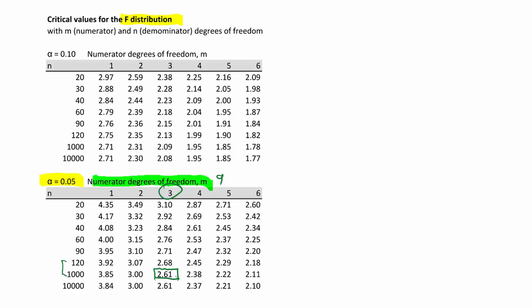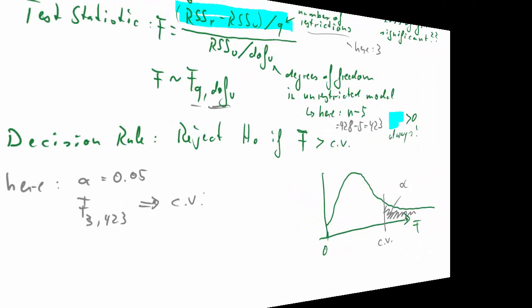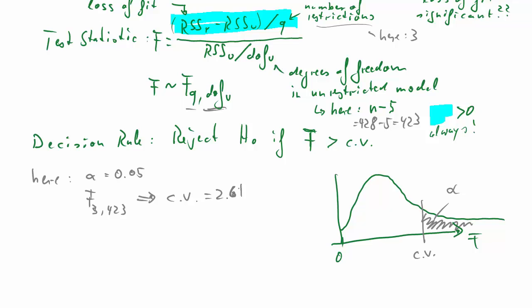and then denominator degrees of freedom, 423, somewhere between these numbers. Let's just use the larger one. It doesn't really matter which one you use. So it's 2.61, which is the critical value.